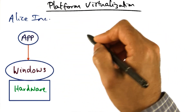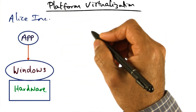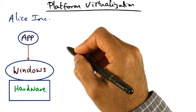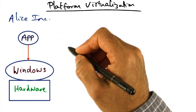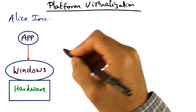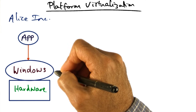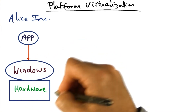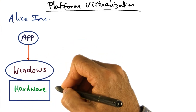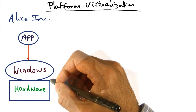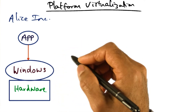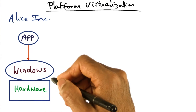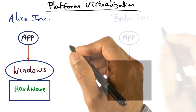Let's say Alice has her own company, Alice Inc., and she has some cool applications to run for productivity. Let's say they're running on a Windows machine, on some server that the company maintains. Now if cost were not an issue, then this would be the ideal situation for Alice Inc.